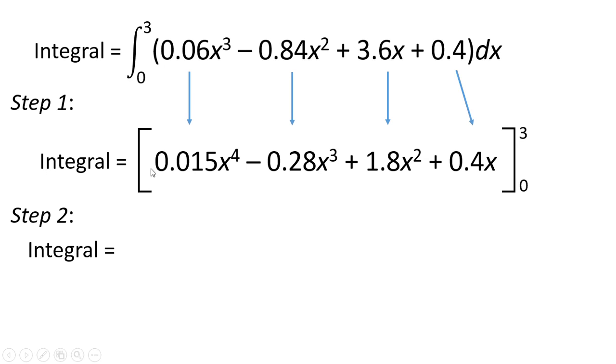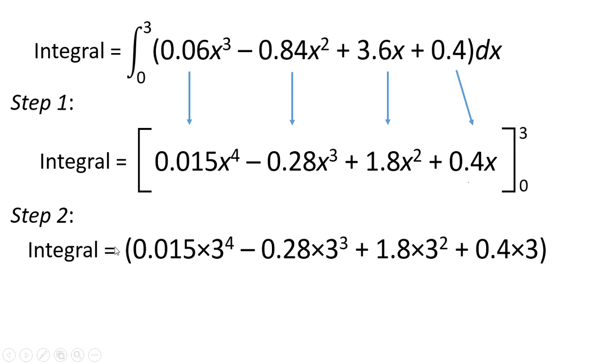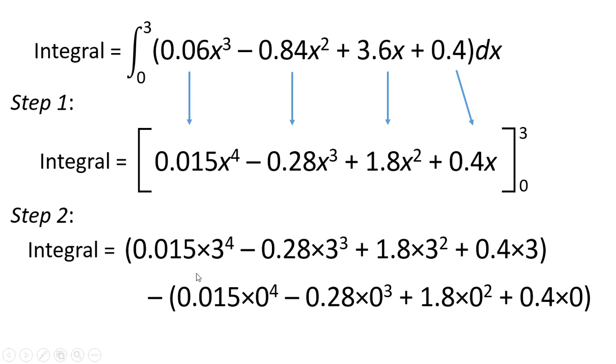Step 2, then, is to evaluate this function at x equals 0 and x equals 3. So to start with, we do it at x equals 3, and we put the value of 3 in, instead of x, in all these places. We then take away this function, evaluated when x equals 0.